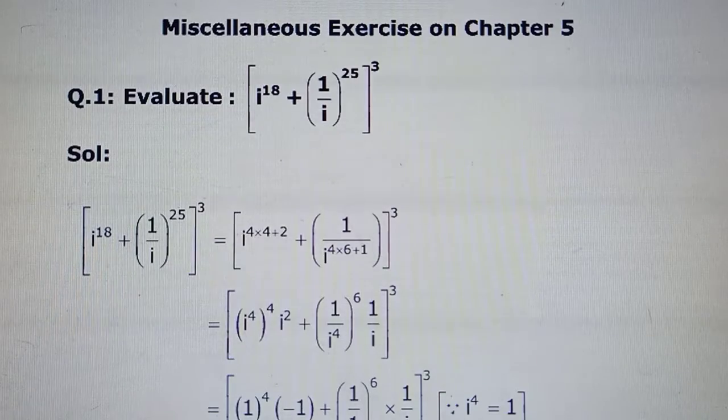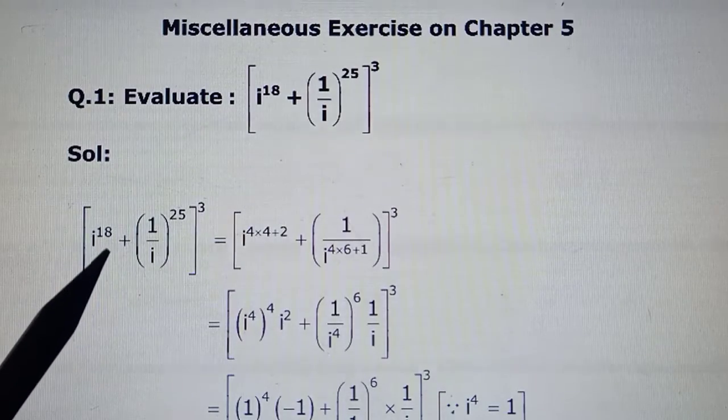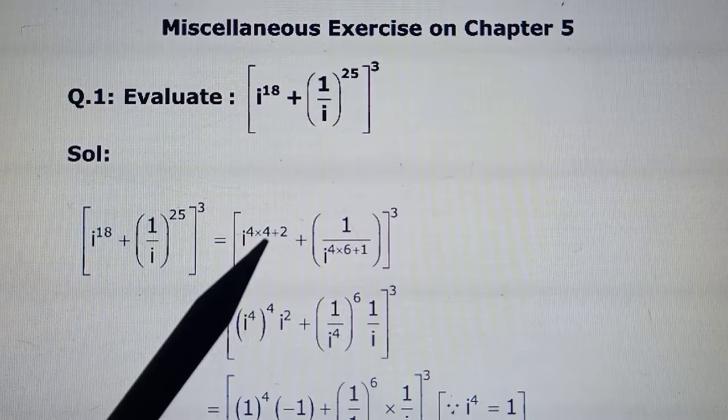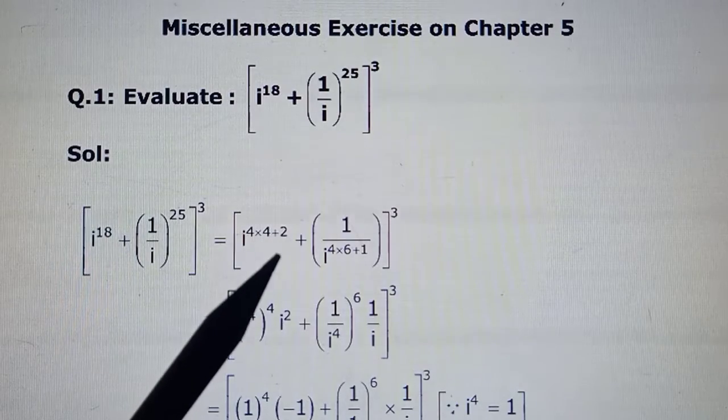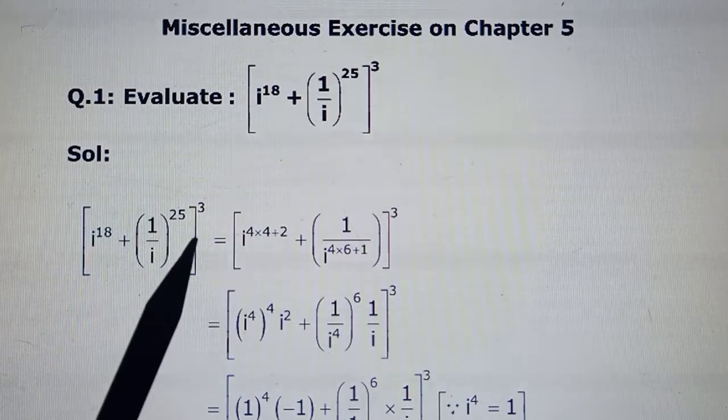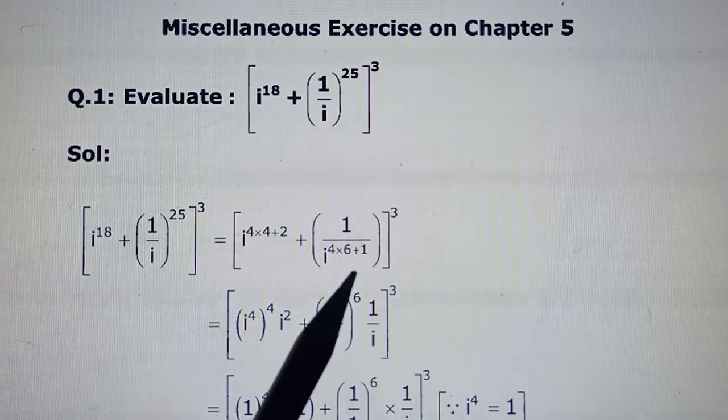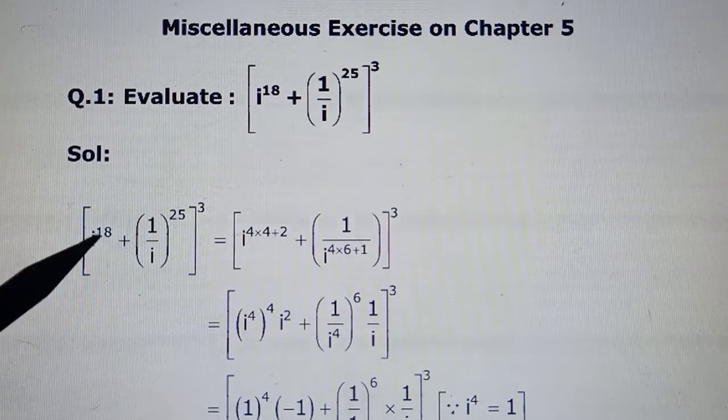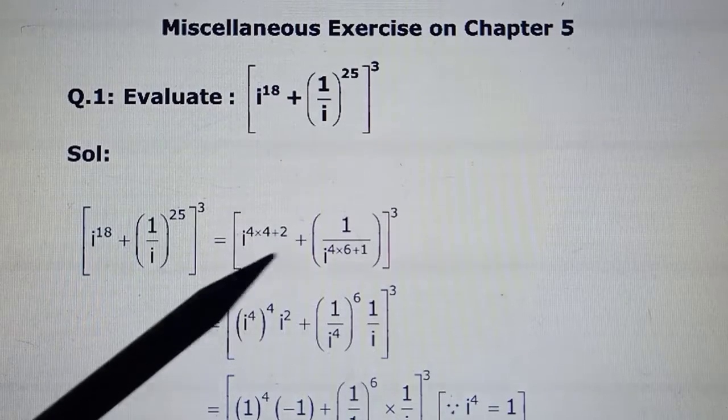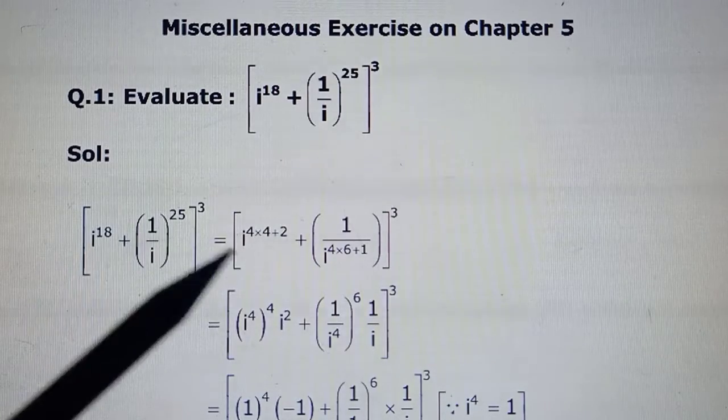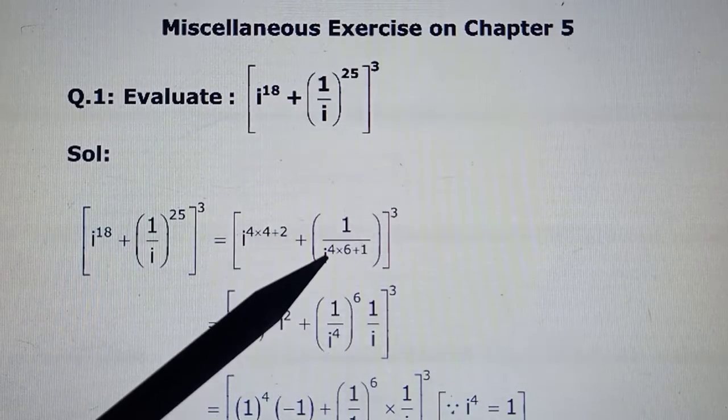So i^18: 4 fours are 16 plus 2, okay? We'll split this 18 as 16 plus 2. And from here, if you're looking for a multiple of 4, 4 sixes are 24 plus 1. Now 1 to any power is 1 only, so we'll write it as 1 in the numerator and this power has to go to the denominator, and we'll write it as a multiple of 4.